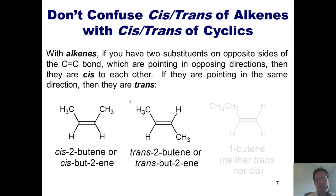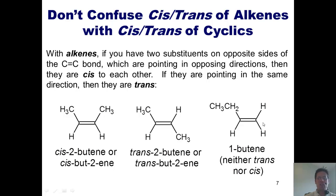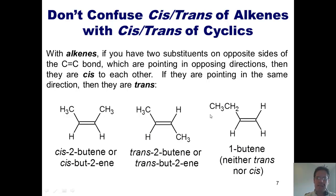What about this example? You'll note that this just has hydrogens. Hydrogens are not considered substituents. Thus, you cannot use the designation cis or trans. This example is simply called 1-butene or but-1-ene.